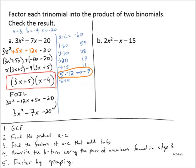Let's see another example, b. We have 2x squared minus x minus 15. So a is 2, b is negative 1, and c is negative 15. There's no GCF — I can't factor out the 2. So let's move to the AC and grouping method. A times c is negative 30: 2 times negative 15 is negative 30.